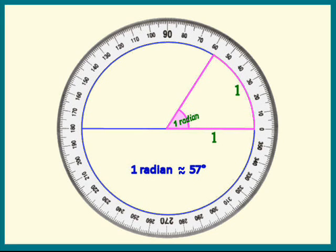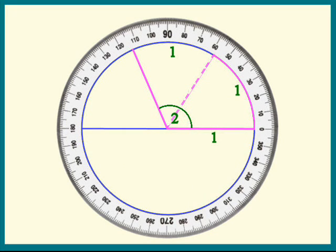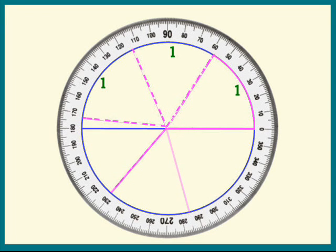When the arc is 2 units, we get 2 radians. When the arc is 3 units, we get 3 radians. Keep going. When the arc is 6 units, we get 6 radians. We're almost back to where we started.